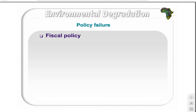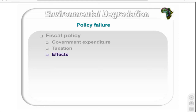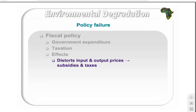Fiscal policy deals with government expenditure and taxation. It can affect degradation as follows: government can distort input or output prices by introducing taxes or subsidies — taxes increase price and decrease demand or supply, while subsidies decrease price and increase demand or supply. Additionally, government may stimulate conservation by providing subsidies to environmentally friendly practices or sectors.